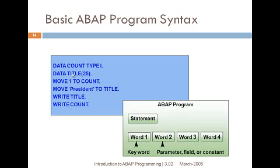DATA title length 25 — if you provide no more information it will consider it as a character. Title is nothing but a character. If you declare anything like DATA title, it will consider it as a character, and 25 tells the length of that character. MOVE 1 TO count — it is assigning the value 1 to count. WRITE title — it will write the data into the final output list.